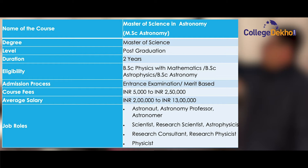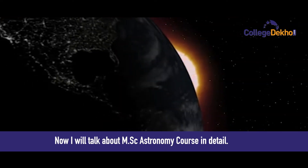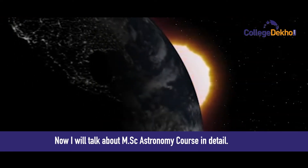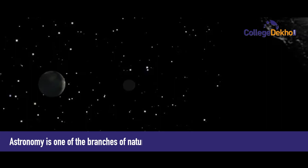Average salary — 2 lakhs to 13 lakhs per annum. Job roles include astronaut, astronomy professor, astronomer, scientist, research scientist, astrophysicist, research consultant, research physicist, and physicist. Now I will talk about the MSc Astronomy course in detail.